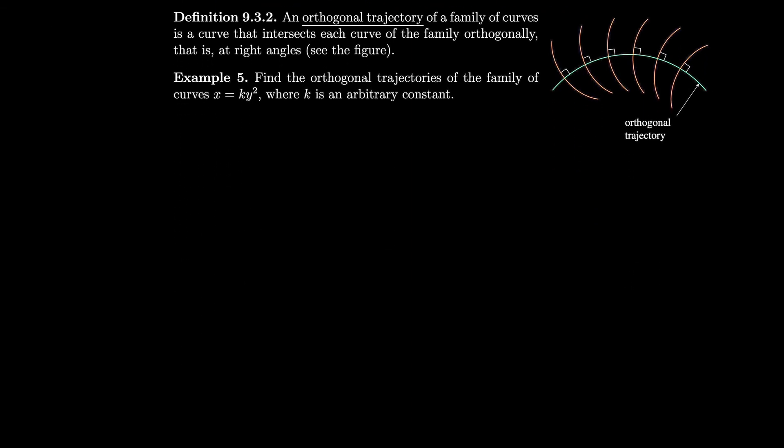An orthogonal trajectory of a family of curves is a curve that intersects each curve of the family orthogonally — that is, at right angles. Looking at our figure, we have a bunch of orange curves that form a family, and a green curve that cuts through all of them at a right angle. That green curve is an orthogonal trajectory.